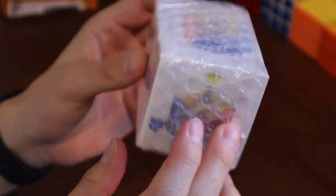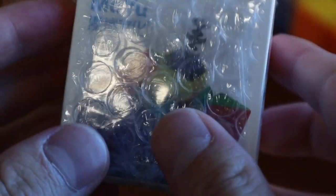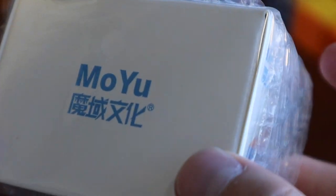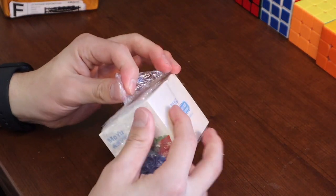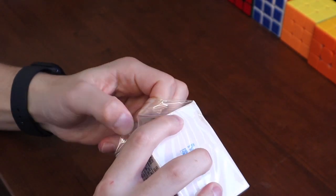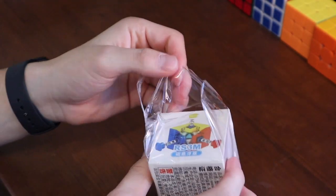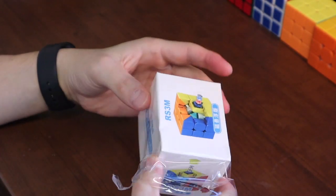But yeah, very nice packaging. Let's get into it. All right guys, here it is, the RS3M from Moyu. Let's check it out. I also have some other cubes here to compare to as well that are magnetic that I like, so that way there's something to compare it to.